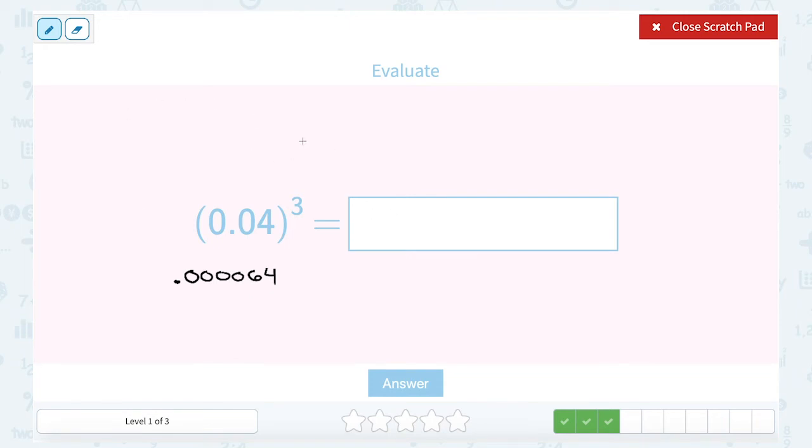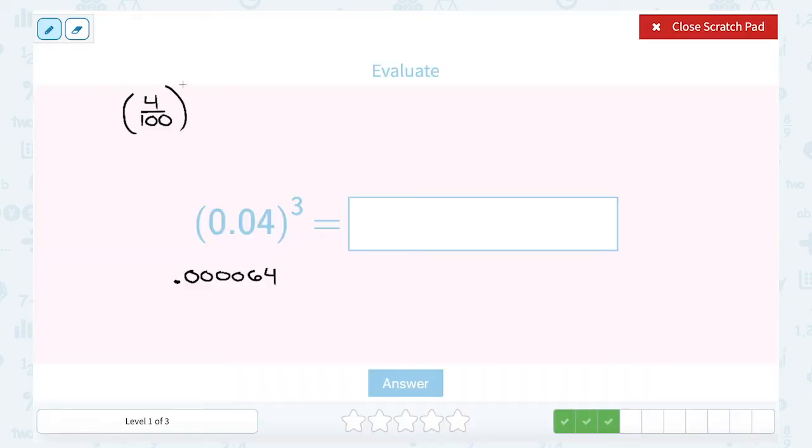Now, if you are not allowed to use a calculator, if that's what your teacher tells you or your specific problem set, another way to do this is to say, well, 4 is in the hundredths place. So 0.04 is the same thing as saying 4 out of 100, 4 hundredths in two different ways.